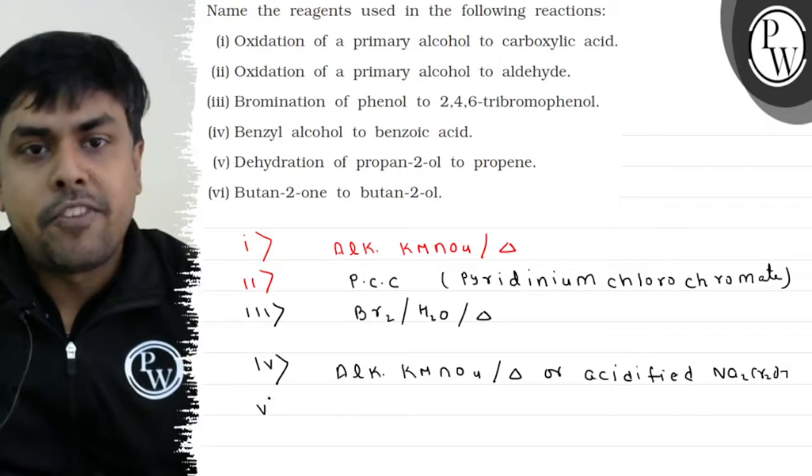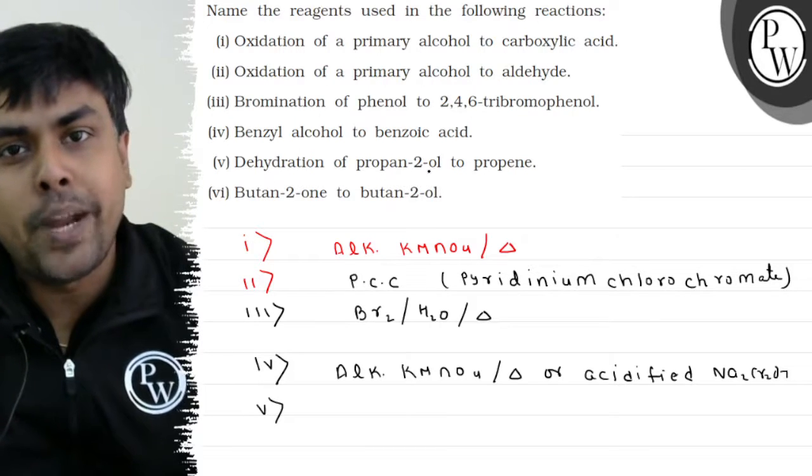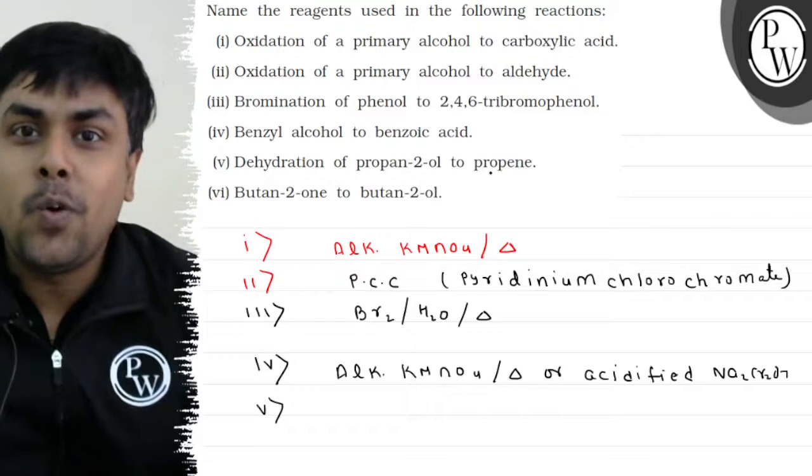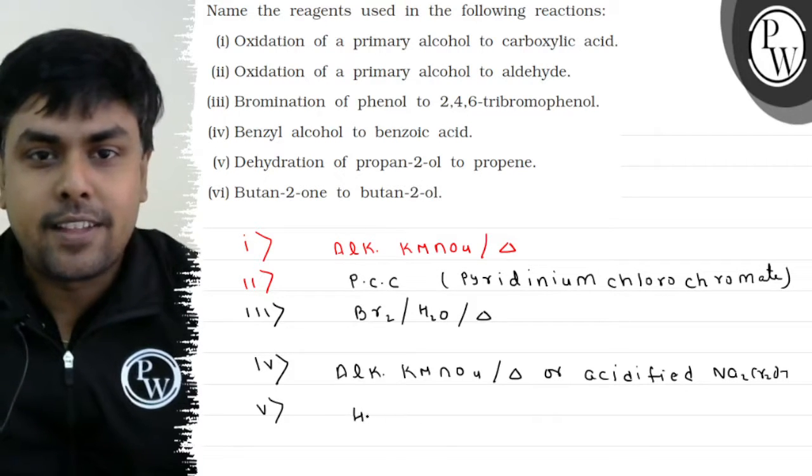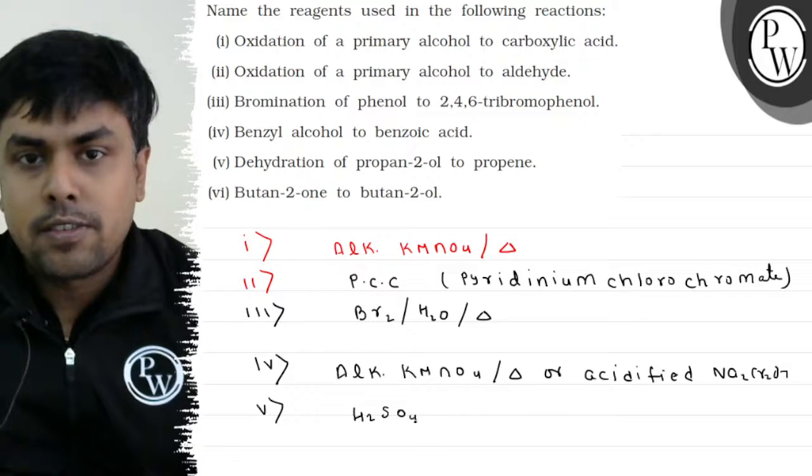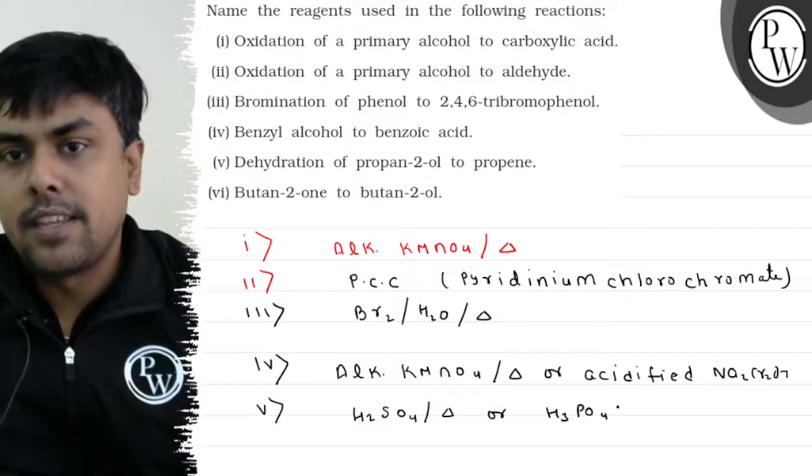Coming to part 5: Dehydration of propan-2-ol to propene. Alcohol को alkene में convert करना. We can use any dehydrating agent, either H2SO4 with heat, or H3PO4 with heat.